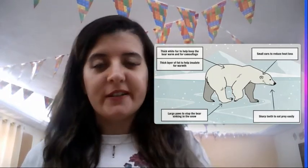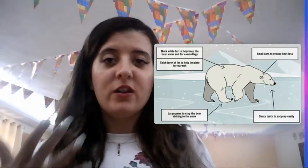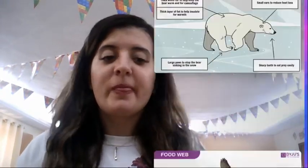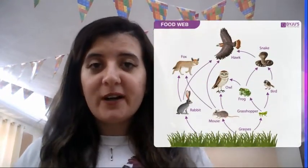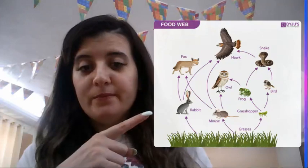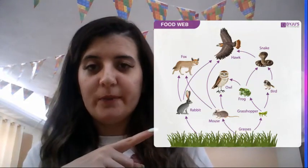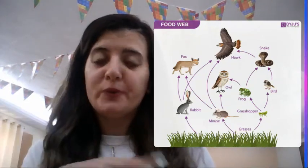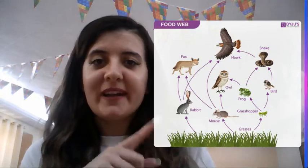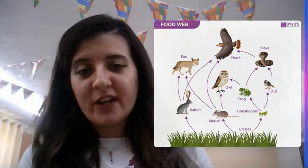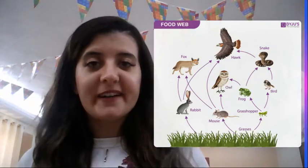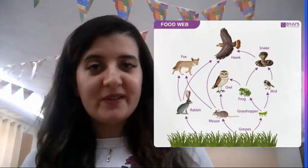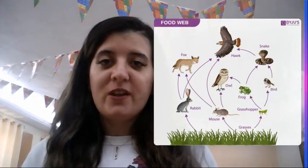For example, the cactus, the arctic flower, palm trees — all of those kinds of adaptations. We're also going to talk about a food web, basically about who eats who. We're going to see how different types of animals and plants interact and how each habitat is different.